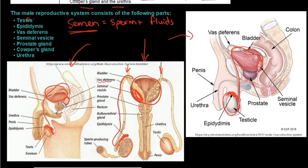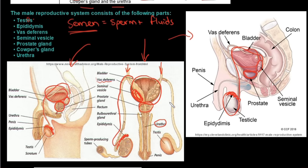Next is the prostate gland, which sits right underneath the bladder. It secretes an alkaline substance because of the low pH conditions found in the urethra and vagina. The urethra is used for both urine and semen transport, so it needs to be cleared of urine before semen passes through — otherwise the low pH can kill sperm. The prostate gland protects the sperm against low pH in the urethra and vagina, and also helps with sperm motility.